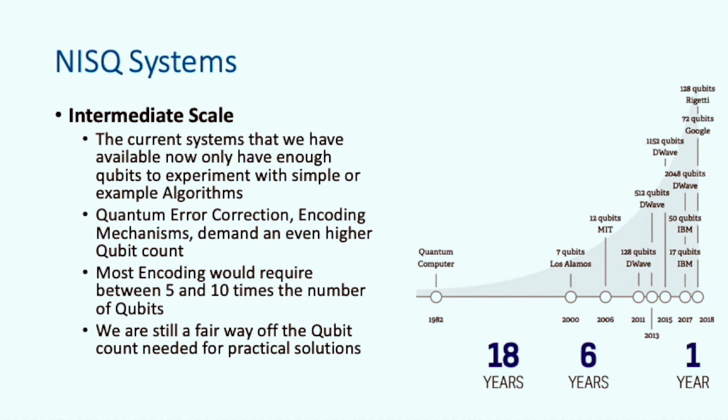The systems that we have access to today online have between 5 and 16 qubits. The largest we have available to the general public on IBM Quantum is 15 qubits. There are systems with qubit counts around 100, but these are generally only available for internal research or made available to commercial partners. There is a lot of research into quantum error correction, but one of the drawbacks of error correction is that it increases the number of qubits required for an algorithm by 5 to 10 times. While we are still a way off the qubit count needed for practical solutions, the pace at which the qubit count is increasing is starting to exceed that of Moore's law.